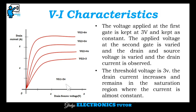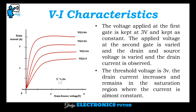This is the V-I characteristics. The voltage applied at the first gate is kept constant at 3 volts. The applied voltage at the second gate is varied, and the drain-source voltage is also varied while the drain current is observed. The threshold voltage is 3 volts. The drain current increases and remains in the saturation region where the current is almost constant.